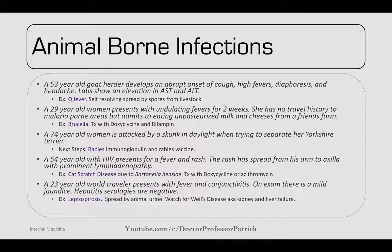A 53-year-old goat herder develops abrupt cough, high fevers, diaphoresis, and headaches. Labs show elevated AST and ALT — this is Q fever. It's self-resolving and spread by spores, often around livestock. A 29-year-old woman presents with undulating fevers for two weeks. She admits to eating unpasteurized milk cheeses from a friend's farm. This would be brucella; treat with doxycycline and rifampin.